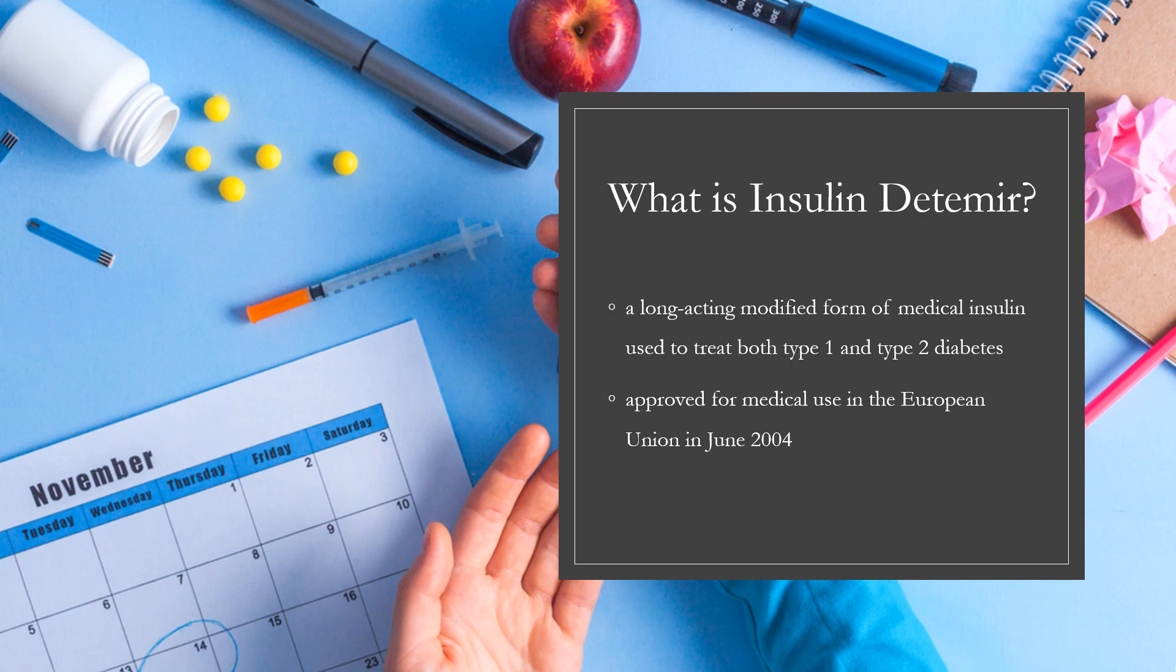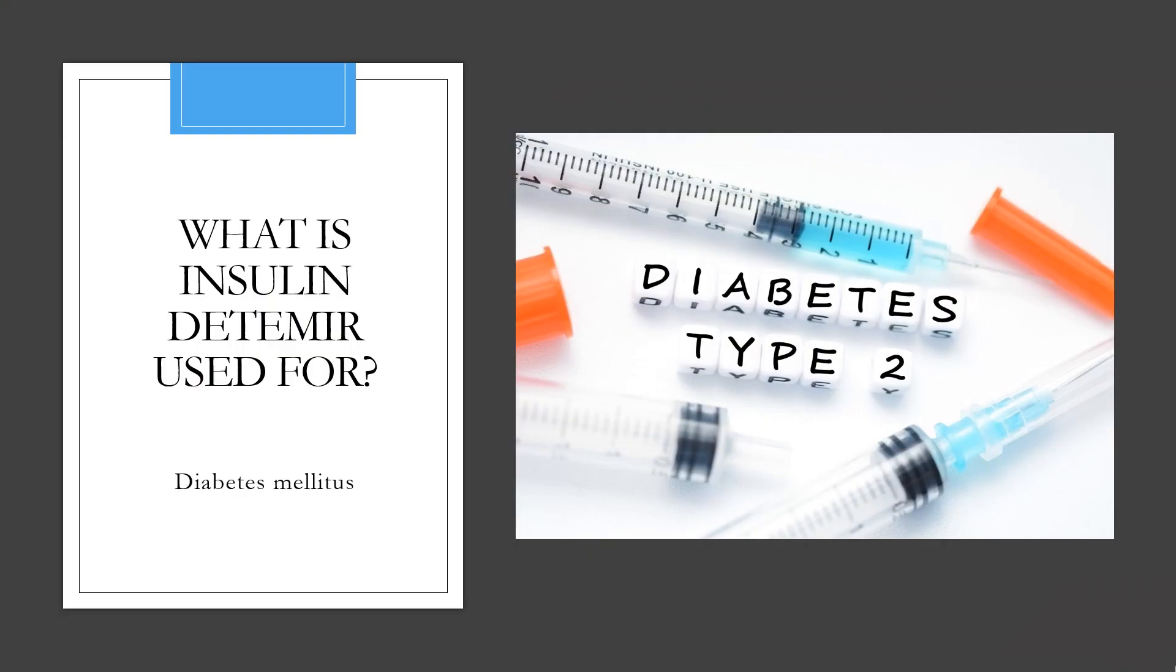In 2020, it was the 124th most commonly prescribed medication in the United States with more than 5 million prescriptions. Insulin detemir is indicated to improve glycemic control in adults and children with diabetes mellitus.